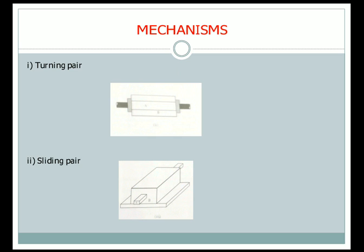Next is the sliding pair. In a sliding pair, there is a rectangular bar A inside component B. B has a cross-section similar to that of A, and we can move A inside B in a to-and-fro direction. This is a sliding pair.